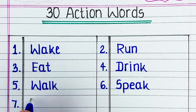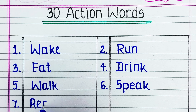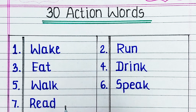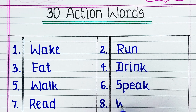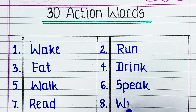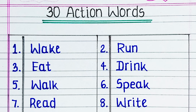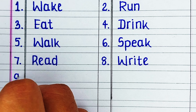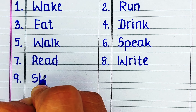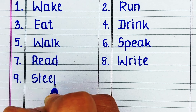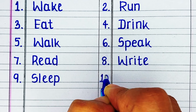Next word is S-P-E-A-K, speak. Next word is R-E-A-D, read. Next word is W-R-I-T-E, write. The next action word in our list is S-L-E-E-P, sleep.